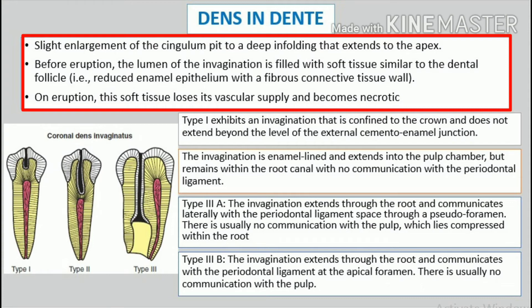On eruption, this soft tissue loses its vascular supply and becomes necrotic. Historically, coronal dens invaginatus has been classified into three major types.